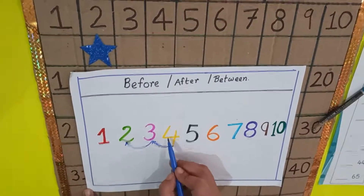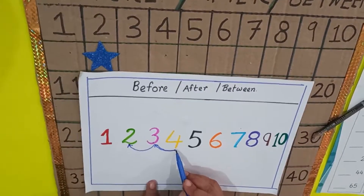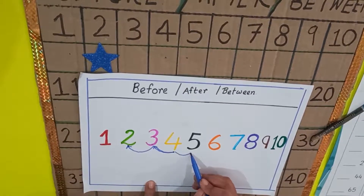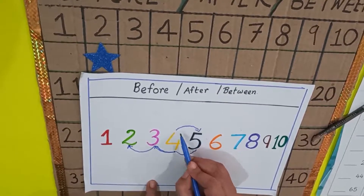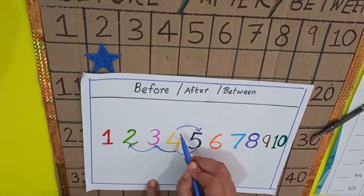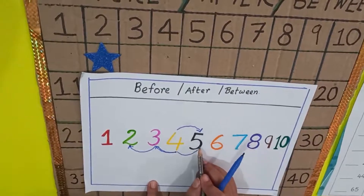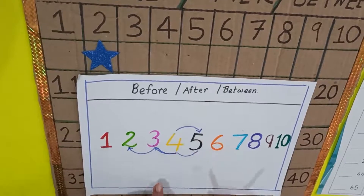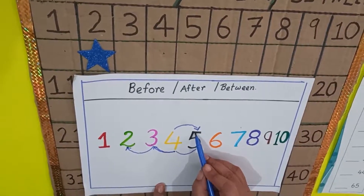This is number four — you already knew it. Now, who is after number four? Look — number five. We are doing the after number: the number that comes after four is five. See, this is four and after four it is five. Now, who is after five? Six.